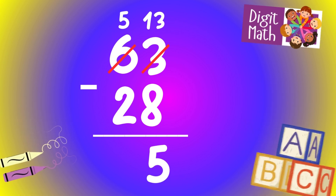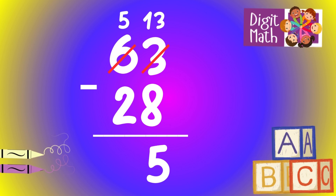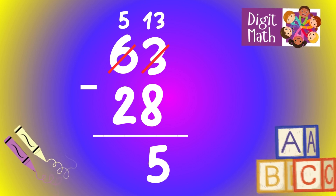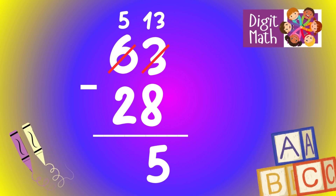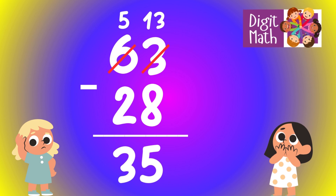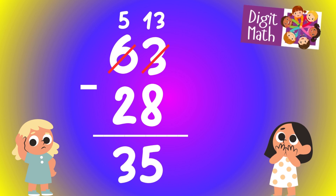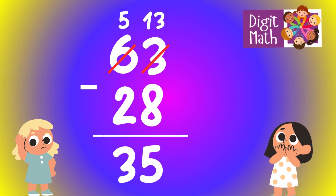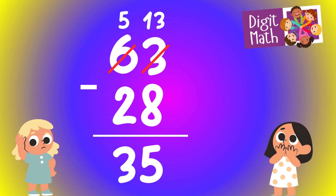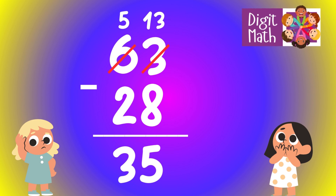In the tens column, we now have 5. Subtract 2 from 5, which equals 3. So the final result is 63 minus 28 equals 35.